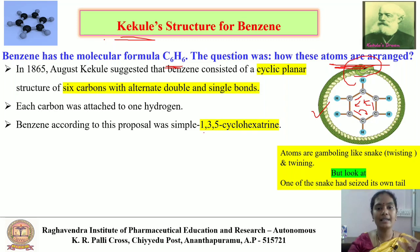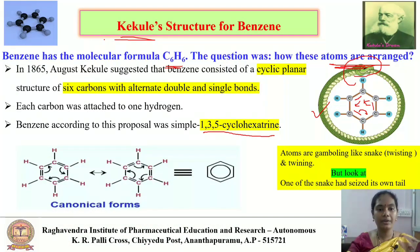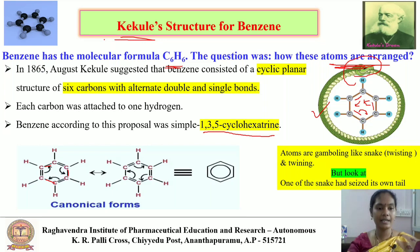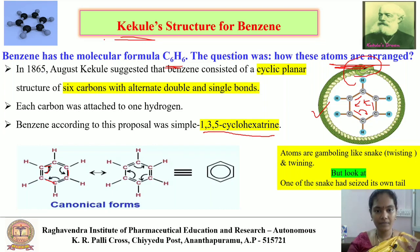In 1865, August Kekule suggested that benzene consists of a cyclic planar structure of six carbon atoms with alternating double and single bonds, with each carbon attached to one hydrogen atom — generally called 1,3,5-cyclohexatriene. In this structure, alternate double and single bonds are present. Due to delocalization of electrons, we get another canonical form. These two structures are known as canonical forms, and the overall hybrid structure is the actual structure of benzene.